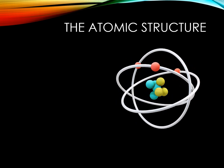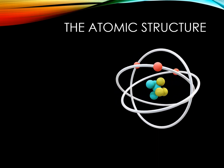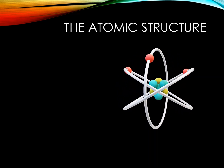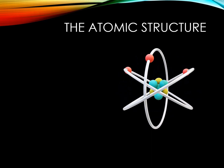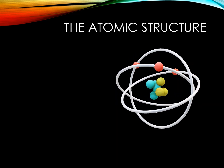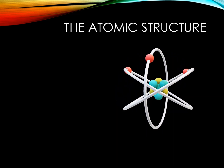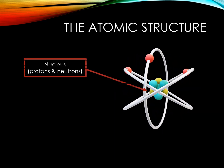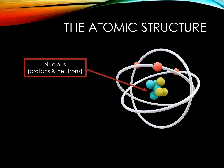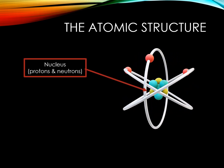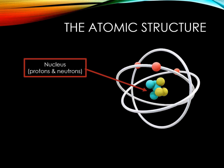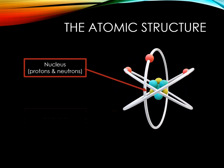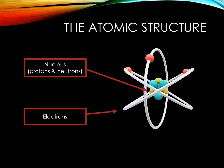The subatomic particles that are important to chemistry are the elementary particles that include the electrons, protons, and neutrons. The protons and neutrons of an atom are packed in an extremely small nucleus at the center, while the electrons are shown as clouds moving around the nucleus.